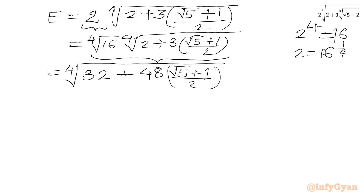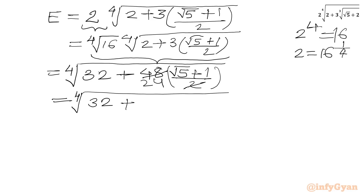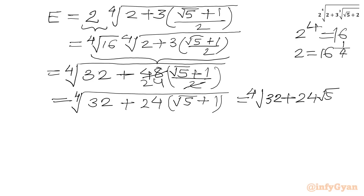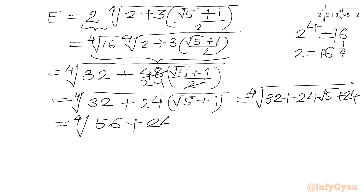We can cancel 48 with the denominator 2, leaving 24. So I can write the 4th root of (32 plus 24 times (root 5 plus 1)), which expands to the 4th root of (32 plus 24 root 5 plus 24). Combining like terms gives the 4th root of (56 plus 24 root 5).